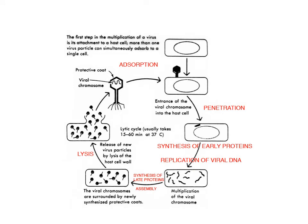This is the same life cycle as other phages we've seen before: inject the DNA, early proteins, replication, formation of new virions, lysis, and then the cycle continues. That's the lytic infection carried out by many different phages, lambda being one of them.